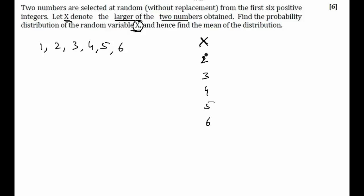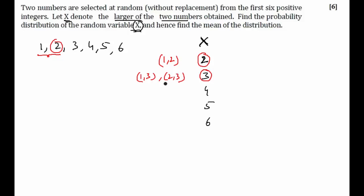If X equals 2, then 2 must be the larger of the two, which means there is only one possible outcome: {1, 2}. Only when we select 1 and 2 will 2 be the larger number. If instead X equals 3, then there are two different cases: {1, 3} and {2, 3} — both satisfy the condition when X equals 3.